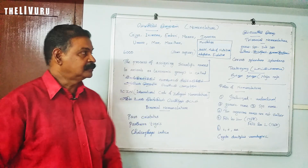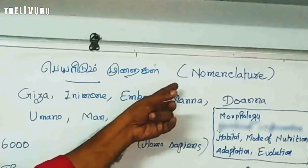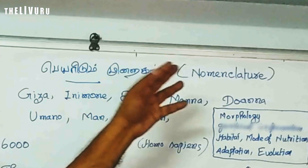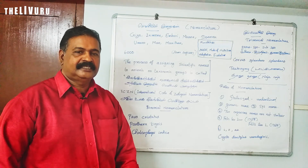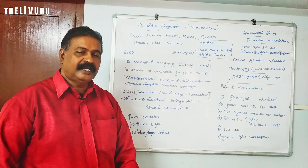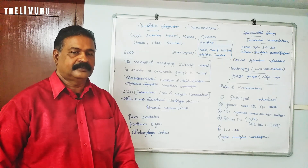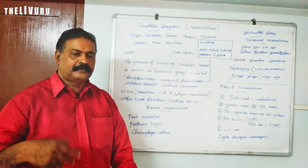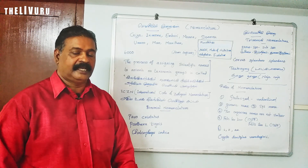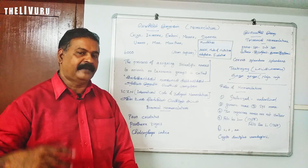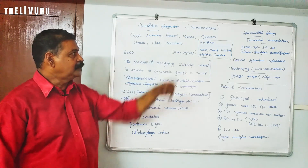In this video, we are going to discuss about nomenclature. In the world, all organisms — animals, plants, birds — have names. What is the process of giving names? It is called nomenclature.